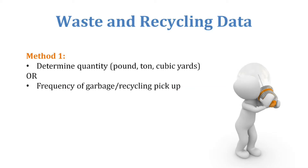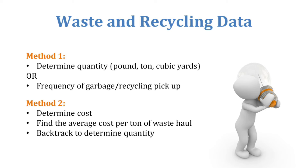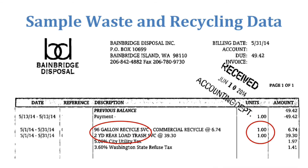I'm going through this detail because you're not always going to get primary data, so you need secondary ways to get there. Waste and recycling is actually the most difficult one. What you're really looking for is pounds, tons, or cubic yards — whatever your dumpster pickup comes in — frequency of pickups and container size can help. If you lease an office and pay a flat dollar figure for utilities as part of a triple net lease, you have to take your overall costs, find the average cost per ton for a waste haul in your region, and backtrack to get the quantity. Here's a sample bill showing units like gallons of recycled material and two-yard loads — make sure you're not mixing yards and gallons.